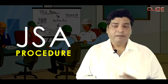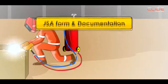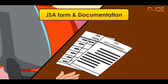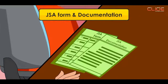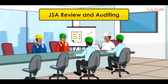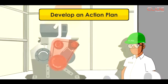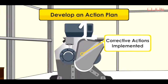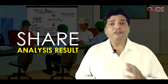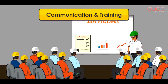The JSA process involves breaking down a particular job into a series of simple steps. In each of these steps, the hazards are identified and documented. After hazards are identified, solutions and recommendations for the prevention of accidents are documented in the JSA. Finally, the results of the analysis are shared with the work-related employees as a JSA document.